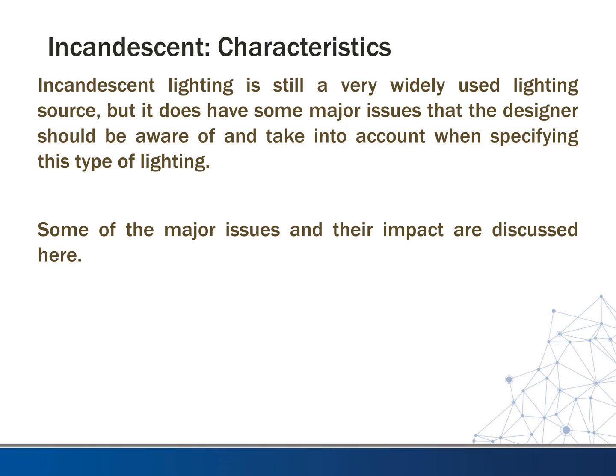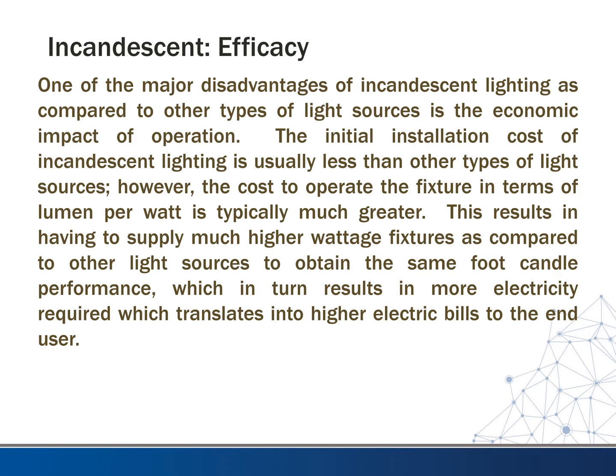Some of the major issues and their impact are discussed here. One of the major disadvantages of incandescent lighting compared to other light sources is the economic impact of operation. The initial installation cost is usually less than other types, however the cost to operate the fixture in terms of lumens per watt is typically much greater. This results in having to supply much higher wattage fixtures to obtain the same foot-candle performance, which in turn requires more electricity and a higher electric bill to the end user.